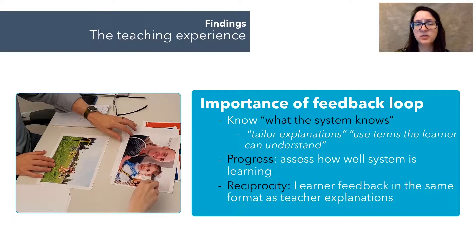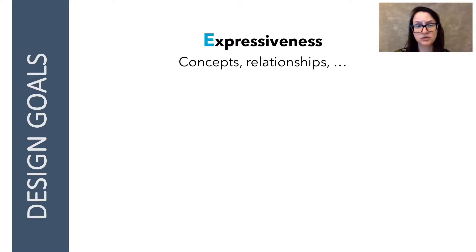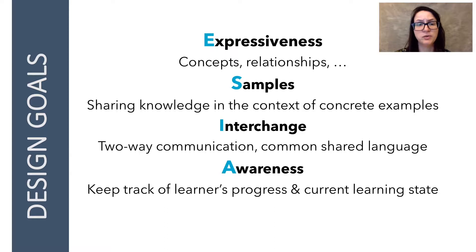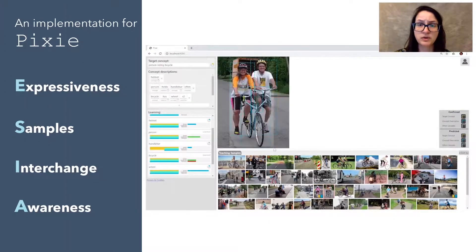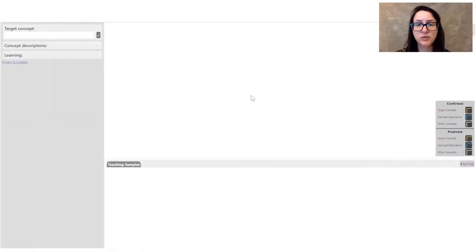Findings underscore the importance of dialogue that allowed participants to gauge what the system knew or didn't know, and there was also an expectation that learner feedback be provided in the same language used by the teacher for explanations. We summarized these findings via a set of design goals, including a minimal but expressive set of language constructs, working with image samples, supporting a two-way dialogue, and providing awareness of the learner's knowledge and progress. We applied these goals to create a design prototype for Pixie, used to reassess the teaching experience in the context of a real computational tool. For a more believable experience, we used two off-the-shelf object detection models to generate predictions.